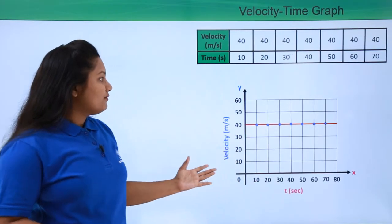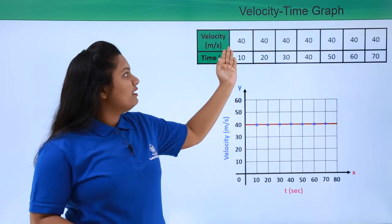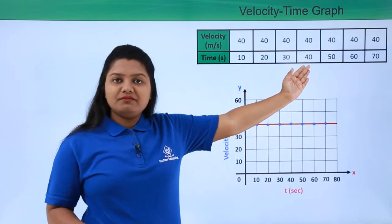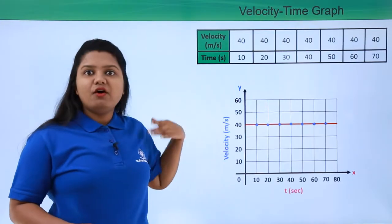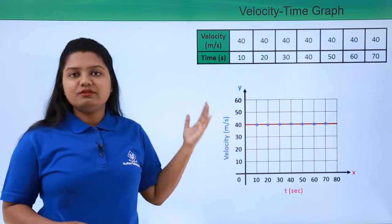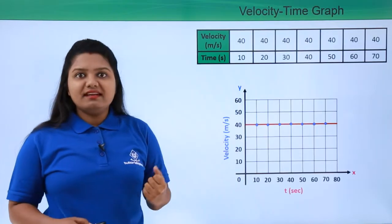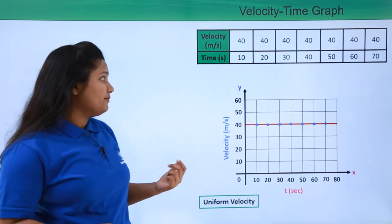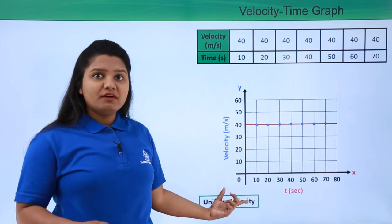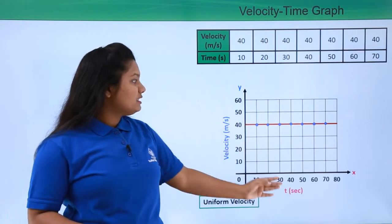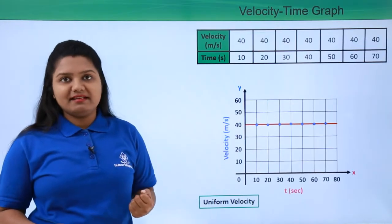We notice here that the velocity of the body is not changing at all throughout — it is 40 meters per second, not decreasing or increasing during the journey. So the velocity of this body is a uniform velocity, and whenever there is uniform velocity, we get a velocity-time graph which is parallel to the x-axis or time axis.